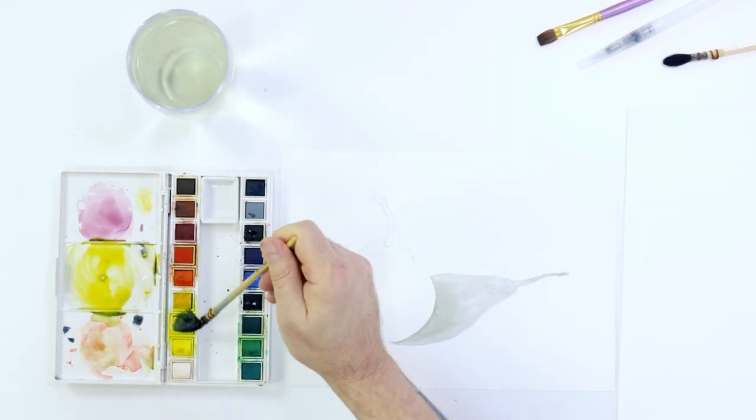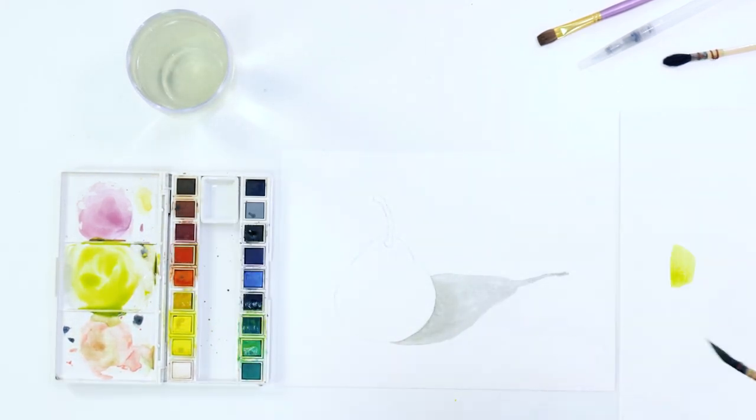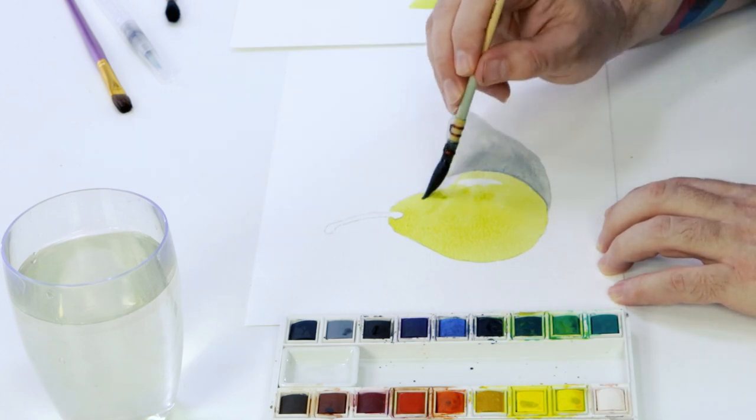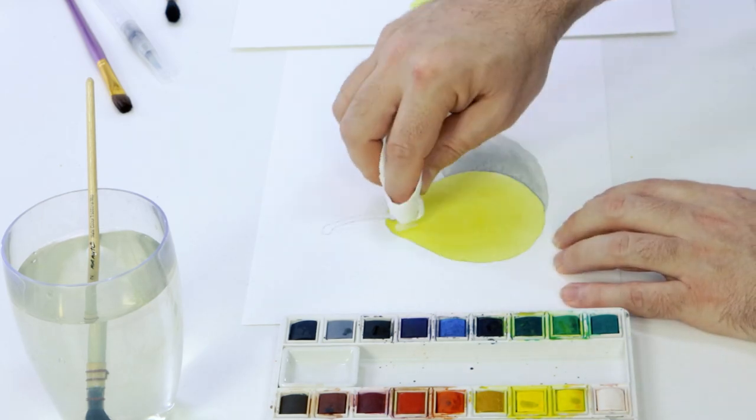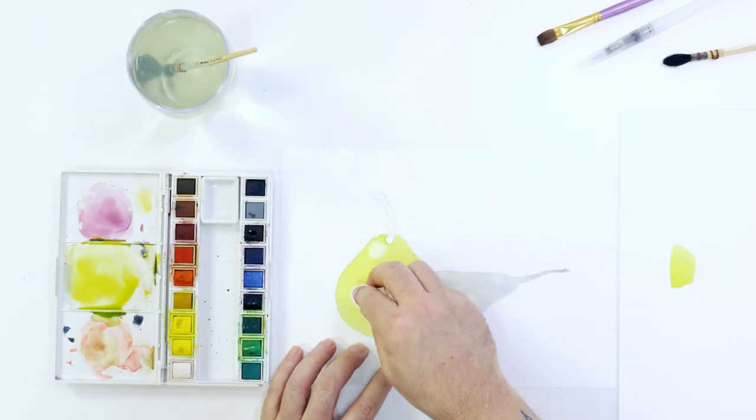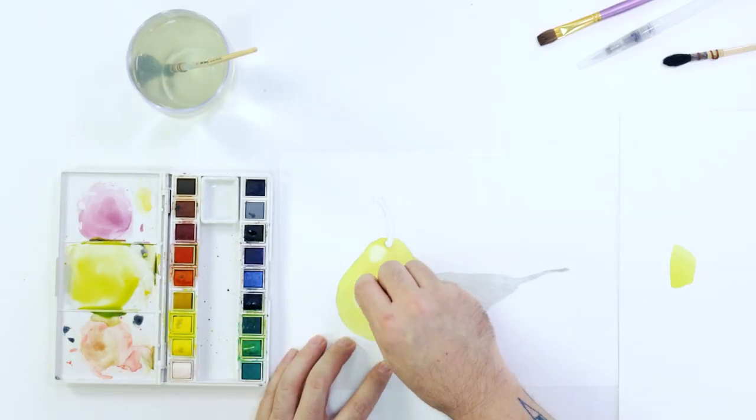We can then create a light green mix from yellow, orange and green and paint this wash over the entire pear. While this is still wet, we use a clean tissue to blot out the color to create highlights and then let this coat dry.